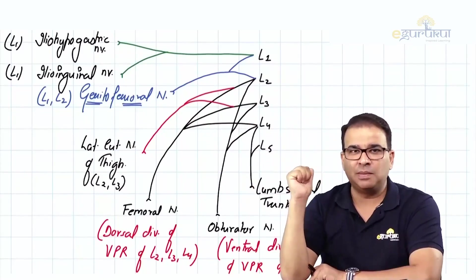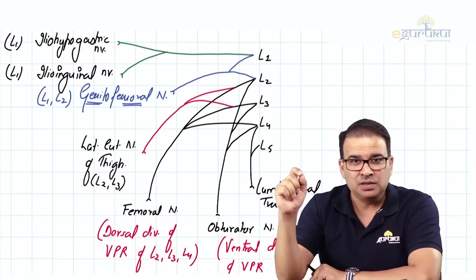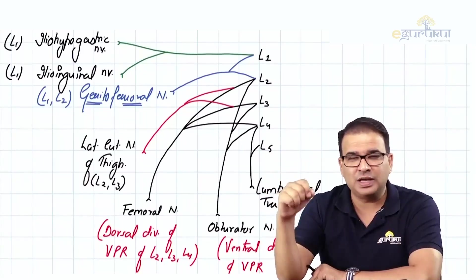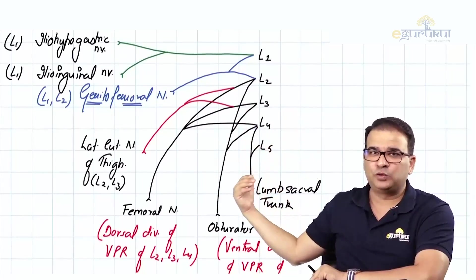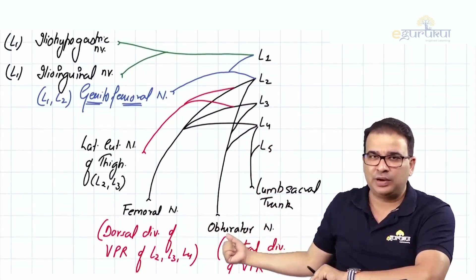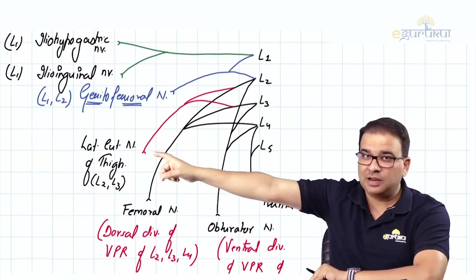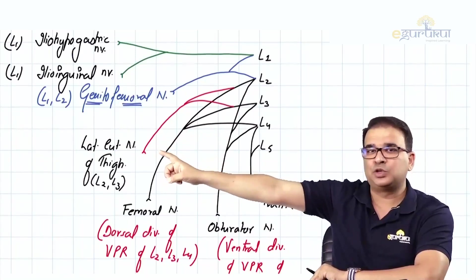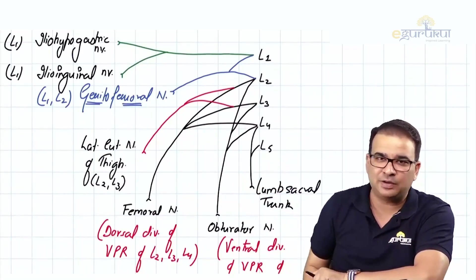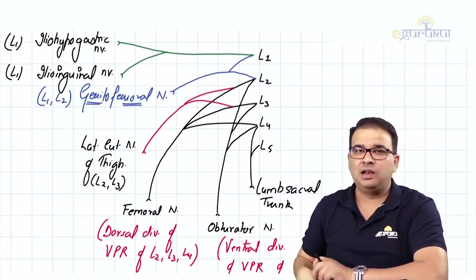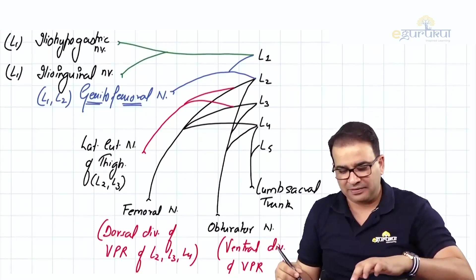To summarize: iliohypogastric and ilioinguinal come from L1; genitofemoral from L1 and L2; lateral cutaneous nerve of the thigh from L2 and L3; femoral and obturator nerve both from L2, L3, L4; and the lumbosacral trunk from L4 and L5.